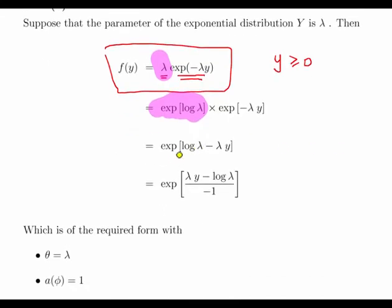So essentially what we're doing is if we're multiplying two exponentials, what we can do is just add the powers together. So we have log lambda and minus lambda times y. So that's the exponential of log lambda minus lambda y.